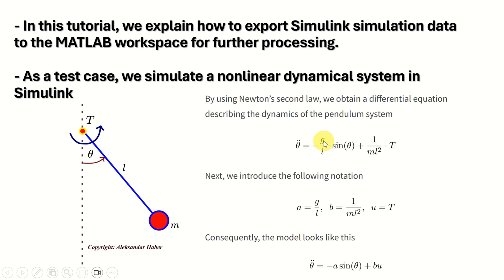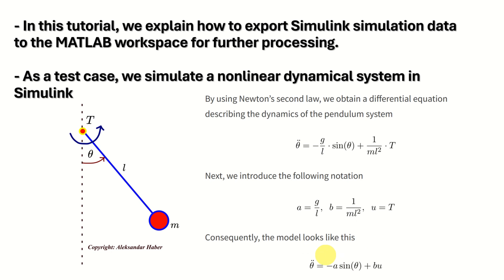In this equation, G is the gravitational acceleration constant, L is the length of the rod, theta is the angle of rotation, M is the mass, and T is the control torque. Next we define A to be equal to G over L, B to be equal to 1 over M times L squared, and U to be equal to T. Consequently our model will look like this. We will use Simulink to simulate this model and then export the simulation data to the MATLAB workspace and plot the results.